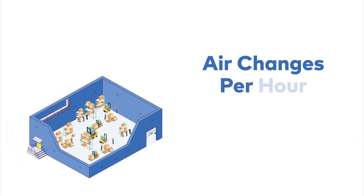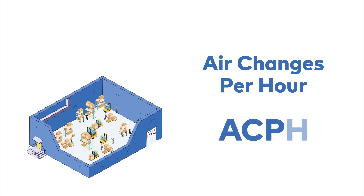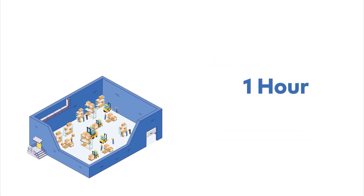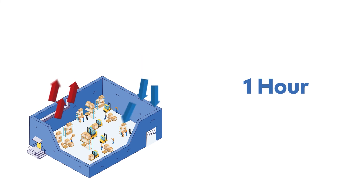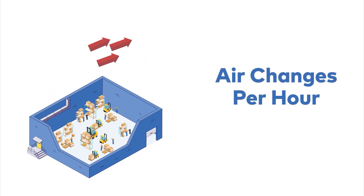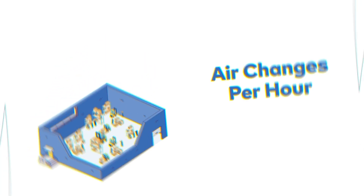To understand industrial ventilation or any kind of ventilation, the most important aspect is air changes per hour — ACPH. In one hour, how many times the inside air is getting changed — that is called air changes per hour.